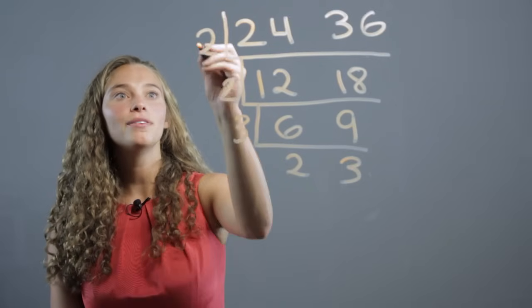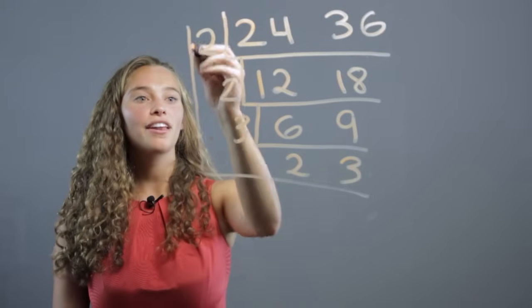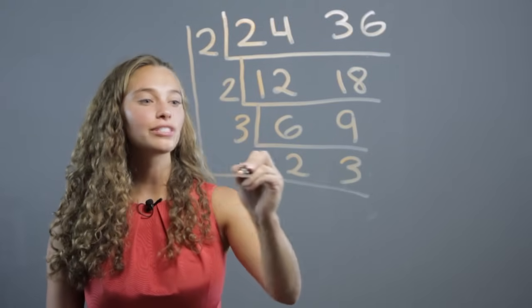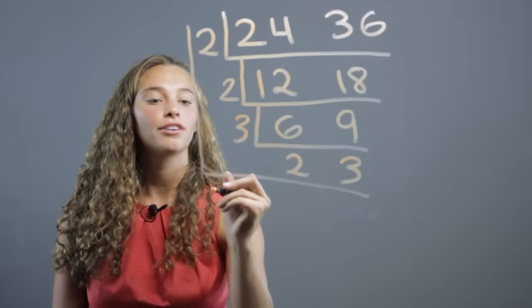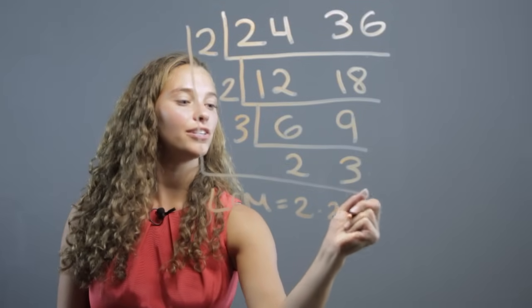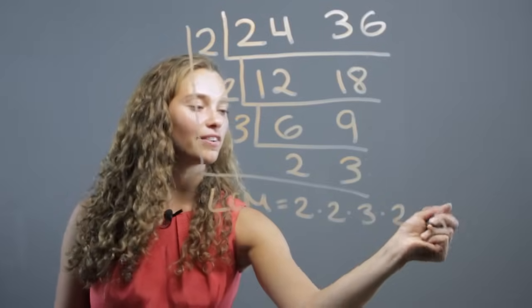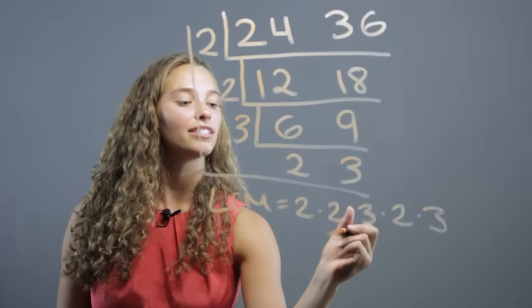To find the LCM, we make an L. And we multiply all those numbers together on the L. So LCM is going to be 2 times 2 times 3 times 2 times 3, which all together is 72.